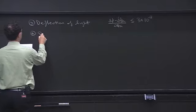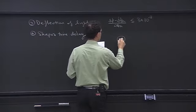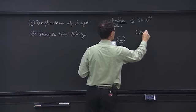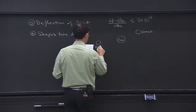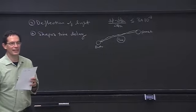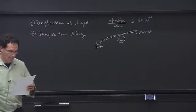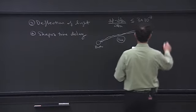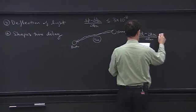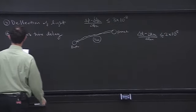There's another effect called the Shapiro time delay. You have the sun, a planet, and the Earth. You send radio waves which bounce off the planet and come back to Earth. GR predicts a time delay due to the gravitational effect of the sun. The precision is quite high: (ΔT − ΔT_theoretical) / ΔT_theoretical is less than 2×10⁻⁵. That's one of the most precise tests of GR.